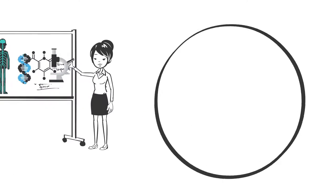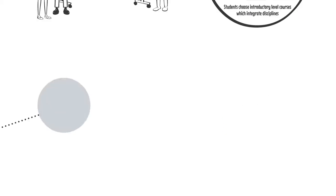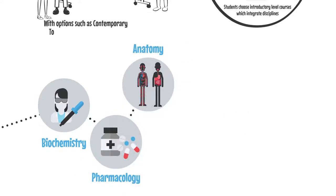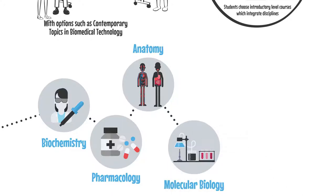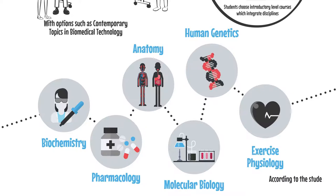During the first two years of study, students choose introductory level courses which integrate disciplines including biochemistry, pharmacology, anatomy, with options such as contemporary topics in biomedical technology, essential molecular biology, human genetics, exercise physiology, according to the student's individual interest.